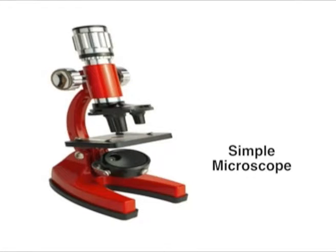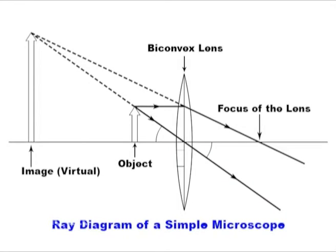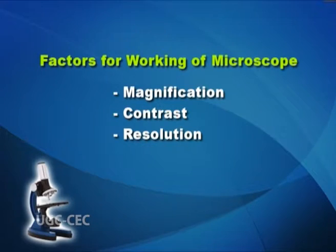There are several limitations of the human eye in seeing very small sized objects. Many cells and unicellular organisms are too small to be detected by the naked human eye. A microscope is an equipment which allows us to observe very small objects. It uses visible light and a system of lenses to magnify images of small objects. There are three factors which play an important role in the working of a microscope: magnification, contrast and resolution.